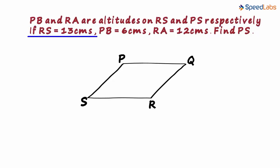If RS is equal to 13 centimeters, PB is equal to 6 centimeters, RA is equal to 12 centimeters, find PS.